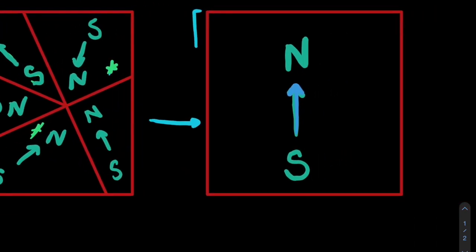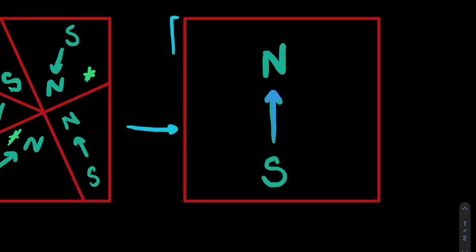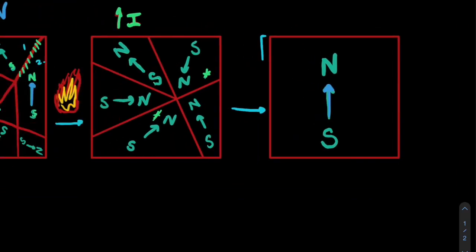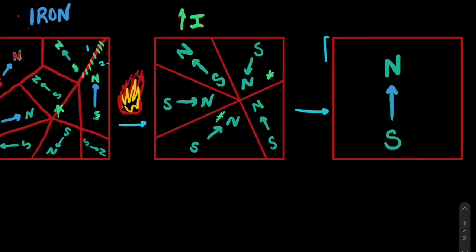And as we continue to do this, this becomes a process in which we align all the domains and induce just one dipole in this piece of iron. And the temperature that is needed to eliminate these domains and consolidate them to produce a common magnetic field is known as the Curie temperature, which in the case of iron happens to be around 770 degrees Celsius or about 1043 approximately Kelvin if you're into that.